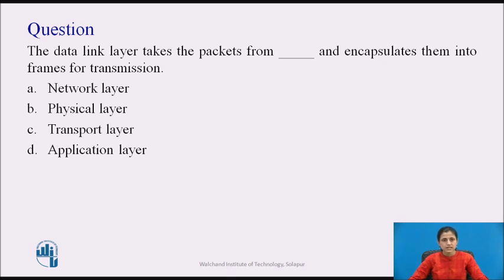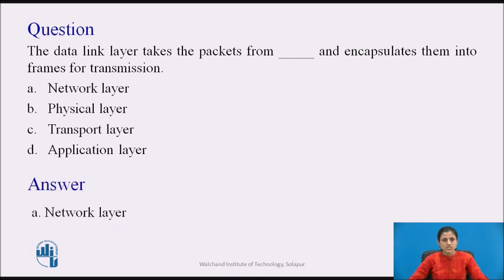The data link layer takes the packets from which layer and encapsulates them into frames for transmission? Option A: Network layer. Option B: Physical layer. Option C: Transport layer. Option D: Application layer. The answer is Option A, Network layer.